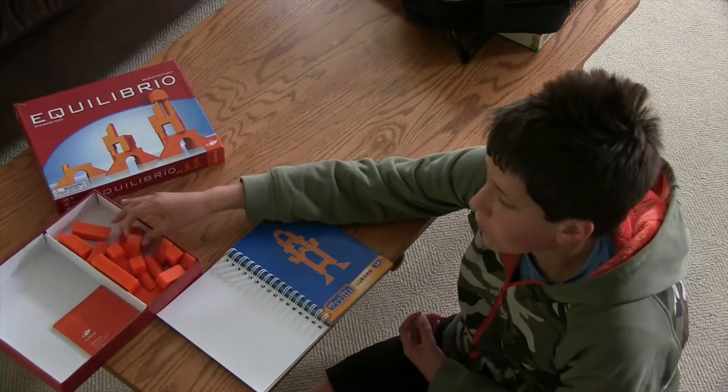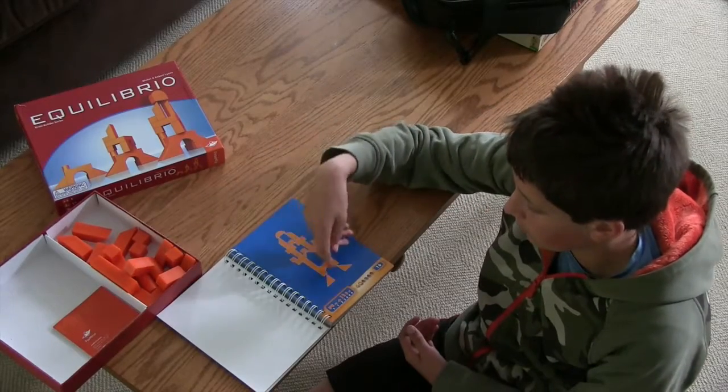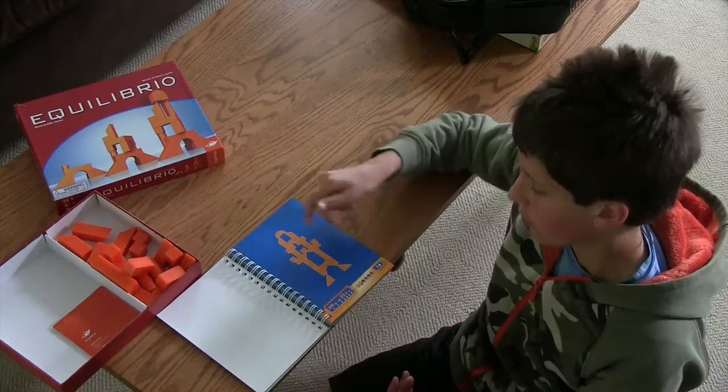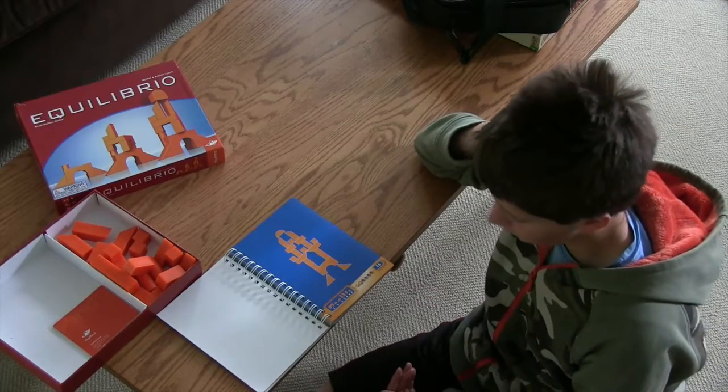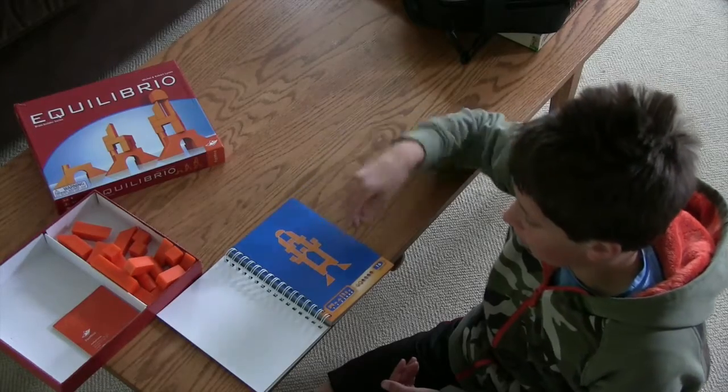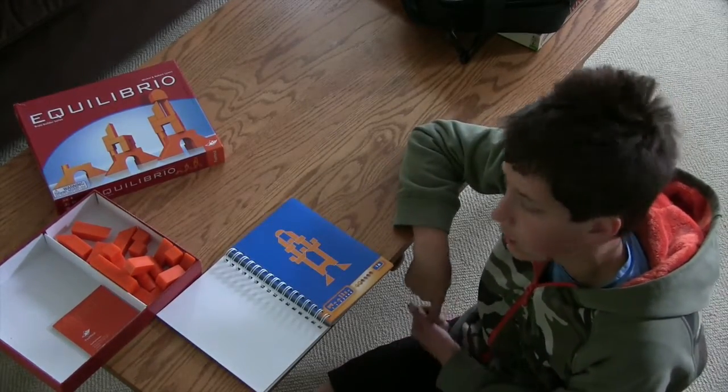Well, you have these pieces and you have to build—it gives you one perspective of it and you have to build this shape. So what are the things that are challenging in this game? Well, this one for example, you have to figure out how to get this whole thing to balance on these two edges.